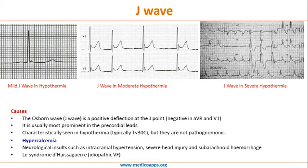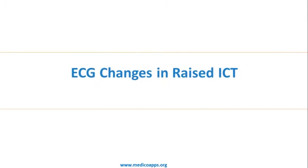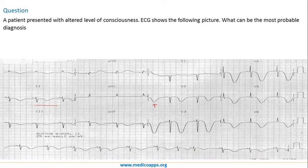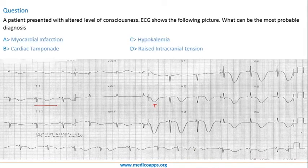J waves are a very important finding and can help make a diagnosis of hypercalcemia and hypothermia. Many patients who come into emergency — particularly vagabond patients — generally show these changes on ECG in winter. Now let's look at another important question: what are the ECG changes in cases of increased intracranial tension? A patient presented with altered level of consciousness and the ECG showed the following picture — what is the most probable diagnosis?